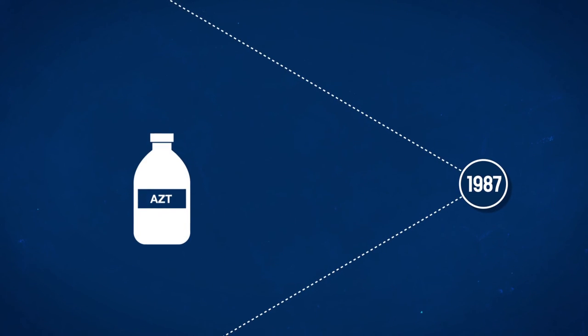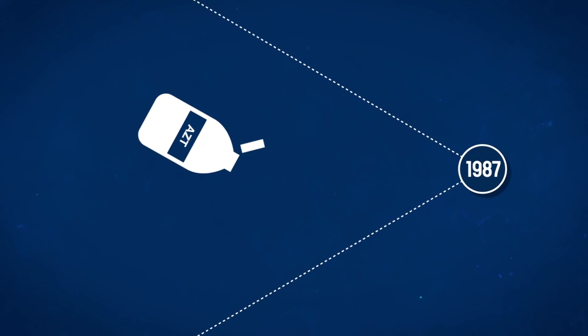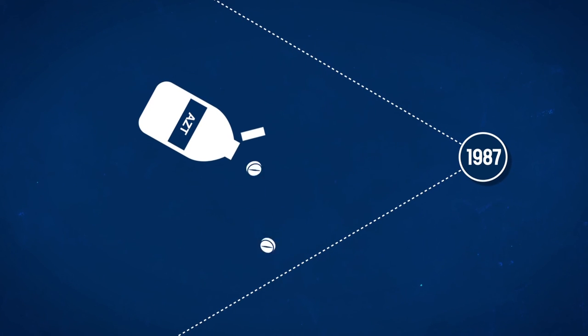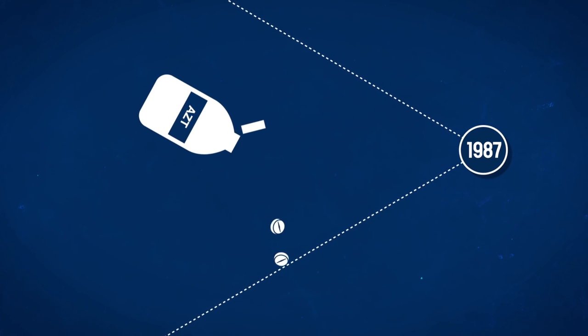In 1987, anti-cancer drug AZT became the first medicine capable of delaying the fatal onset of the disease.